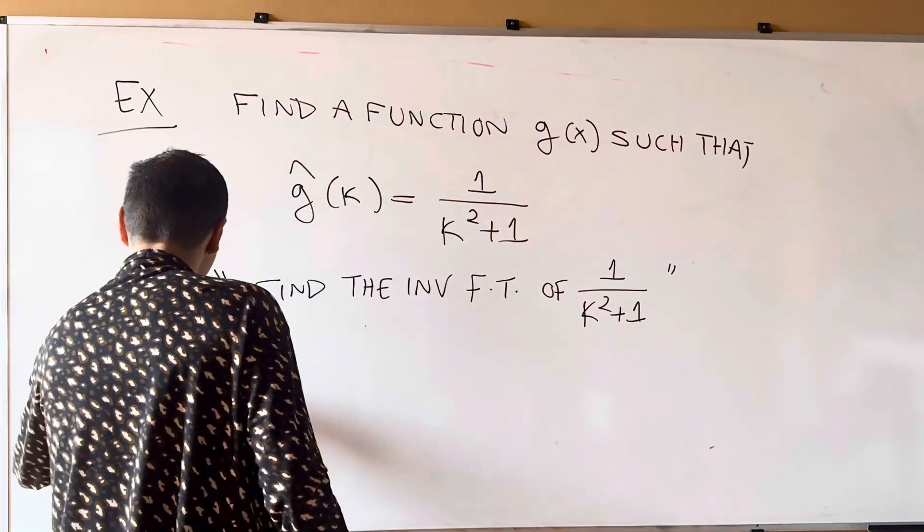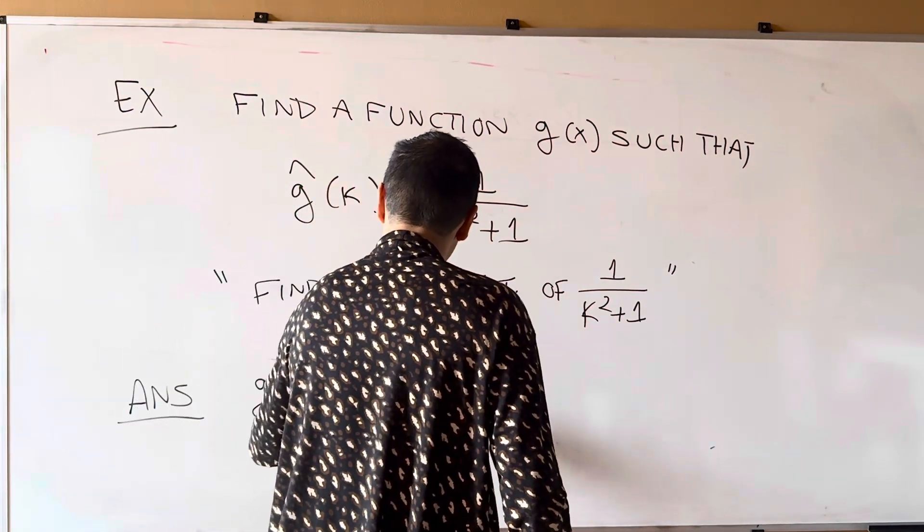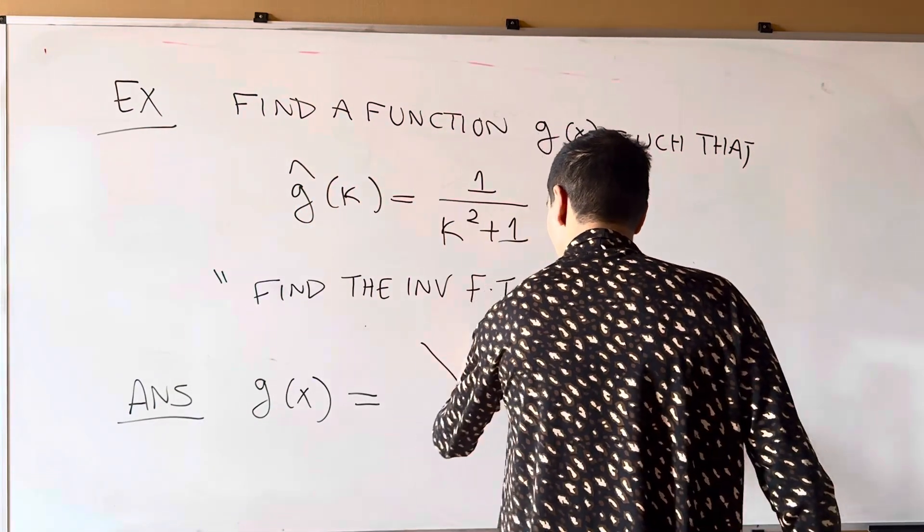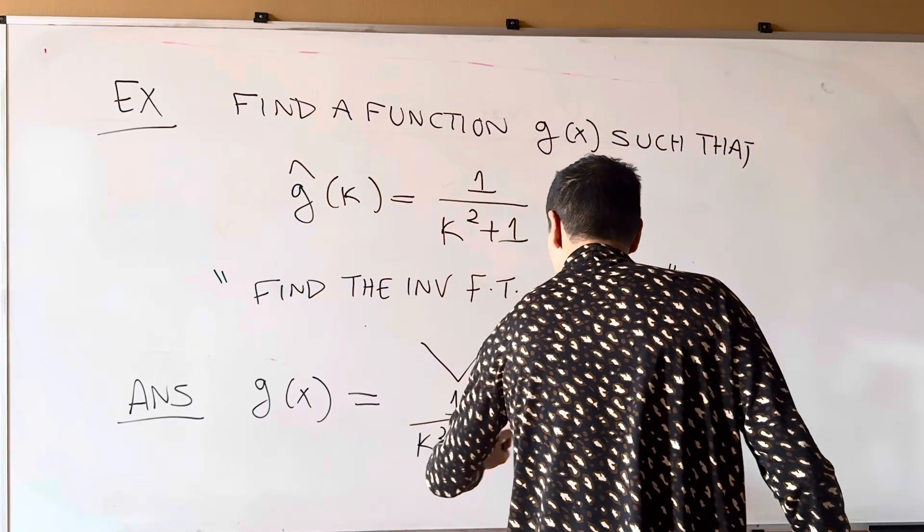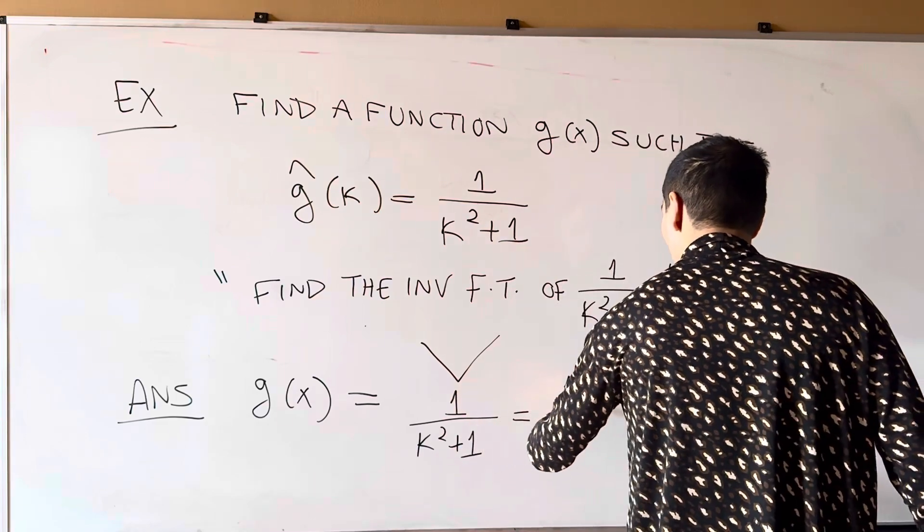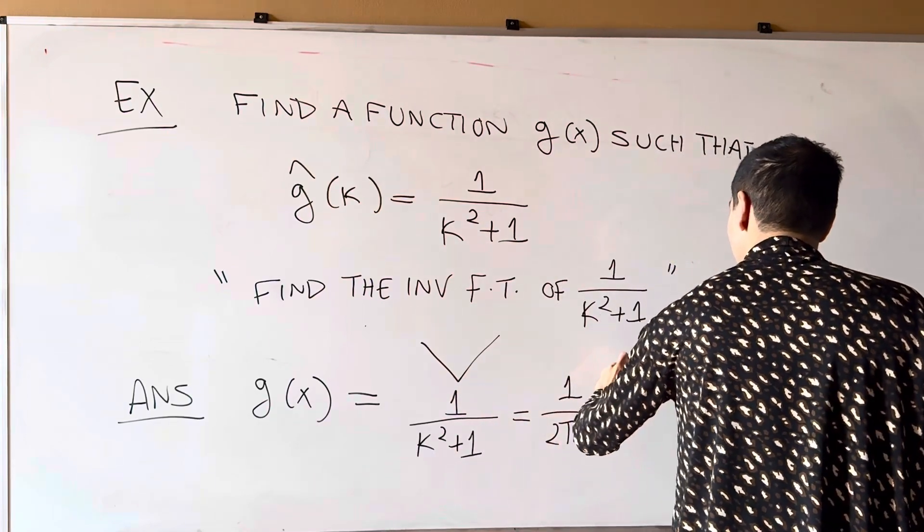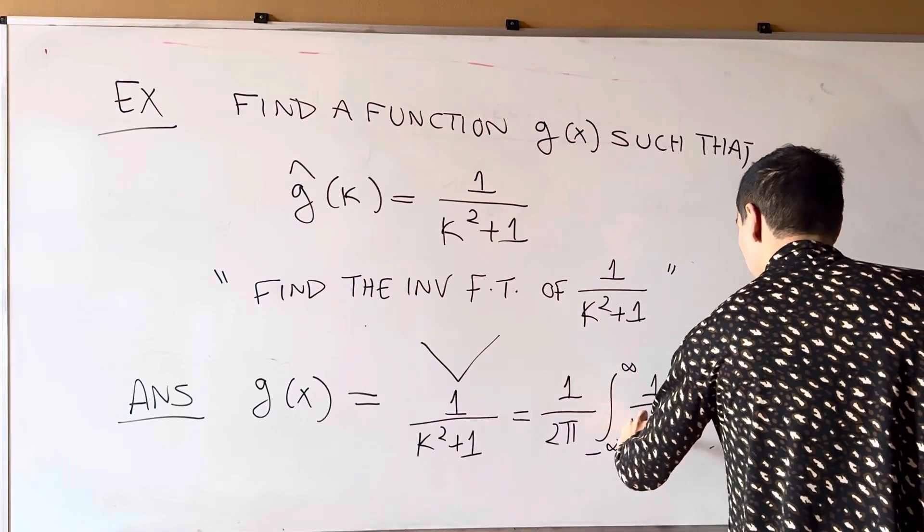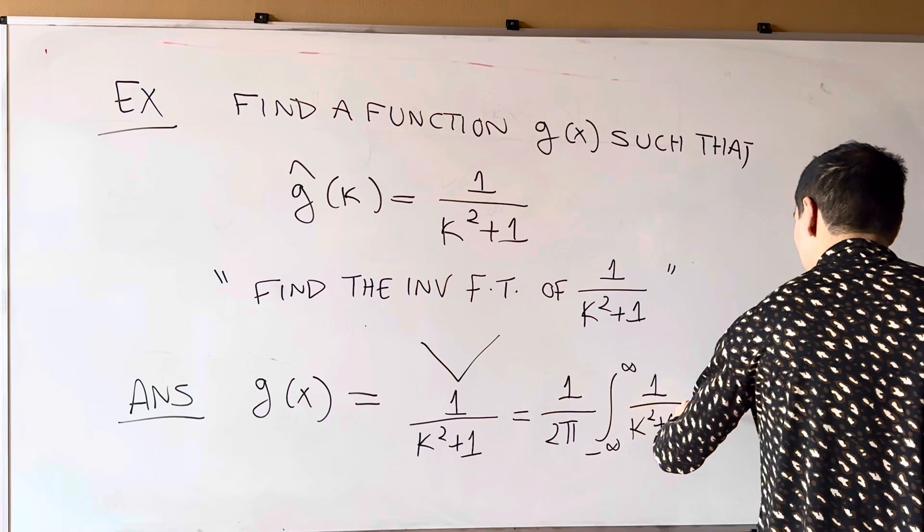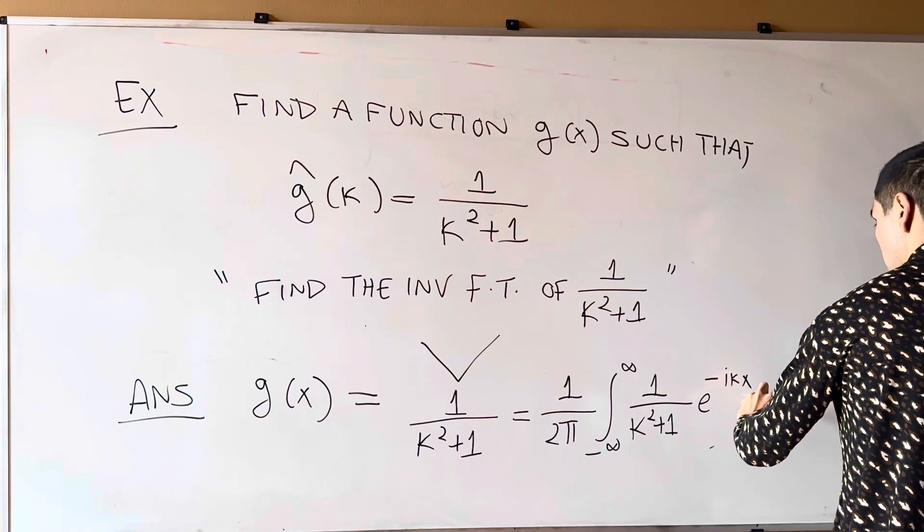the answer is literally the inverse Fourier transform of this function. So answer, so g of x, it's literally check of one over kappa squared plus one, and it's just one over two pi integral from minus infinity to infinity of one over kappa squared plus one, e to the minus i kappa x, and then d kappa.